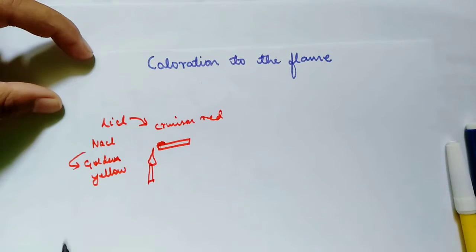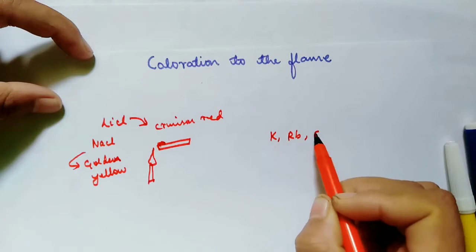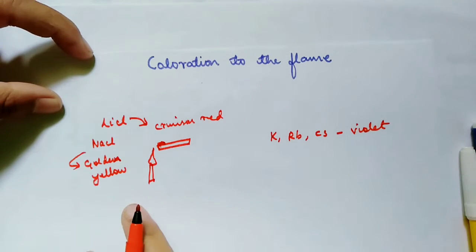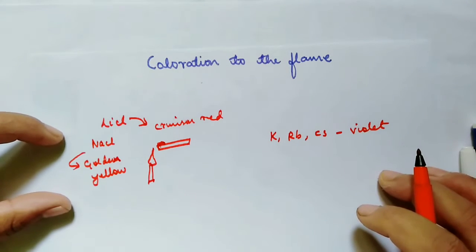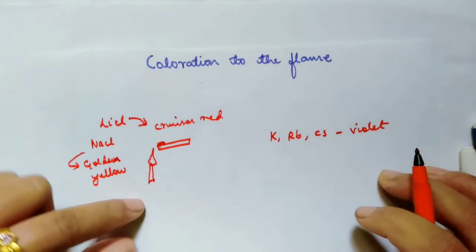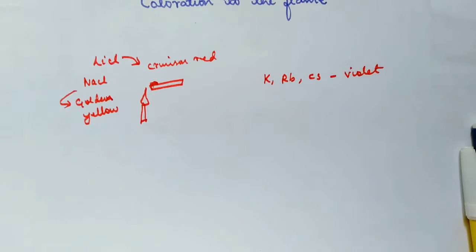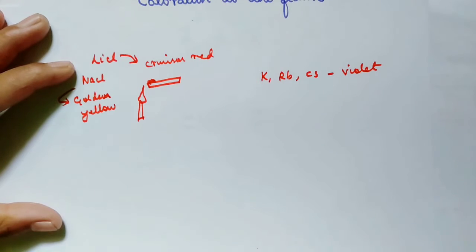For potassium, rubidium, and cesium, their salts give violet color when they are burned in a Bunsen flame. Now why do these salts of different alkali metals give different colors when they are burned in a Bunsen flame? We will be learning that in this video.